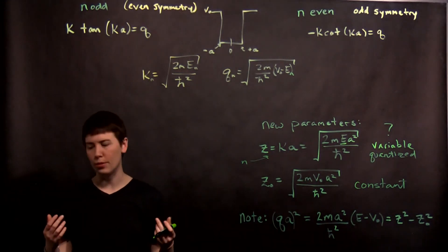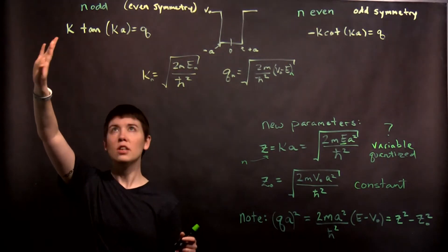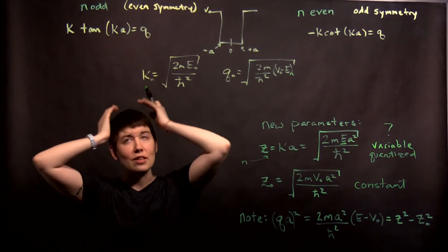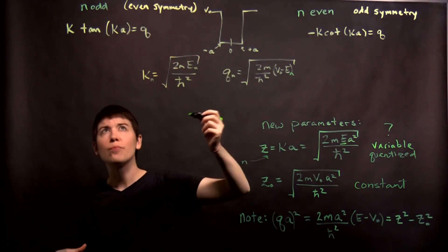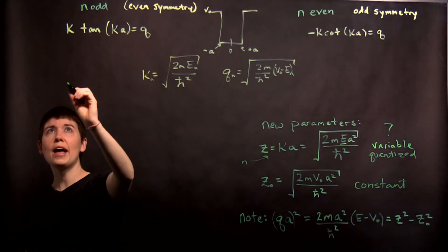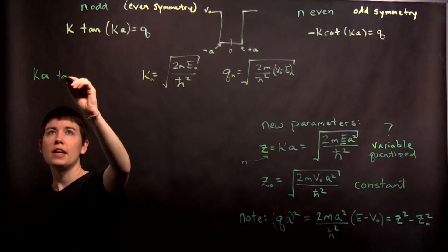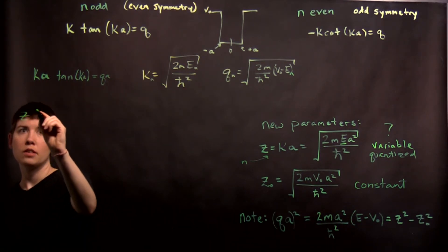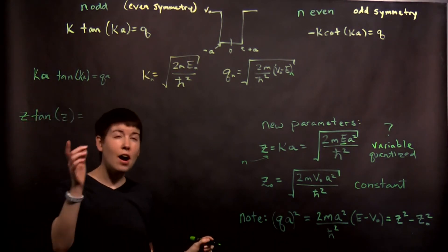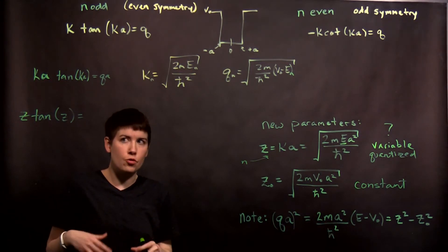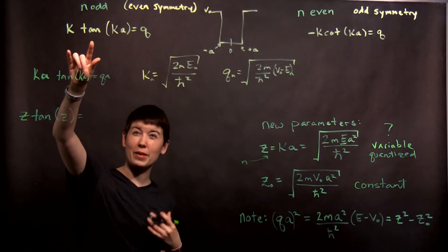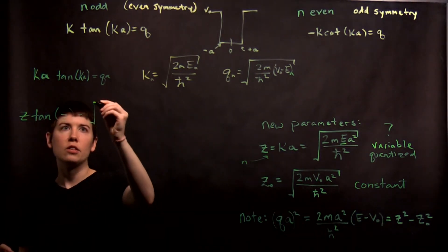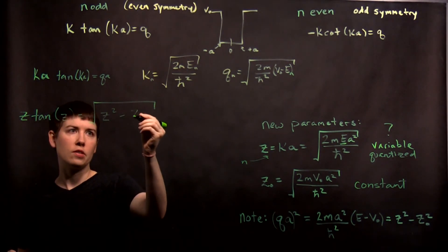Why are we doing this? So we can look at our two cases — odd symmetry and even symmetry solutions — and remember that if N is odd, that's an even symmetry solution. Starting with the K tangent case: I multiply both sides by A to get KA tangent of KA equals QA. Since KA is Z, I have Z tangent of Z equals something. I don't want to introduce more parameters — they both depended on E anyway. I don't have QA squared, I have QA, so what I get is the square root of Z naught squared minus Z squared.